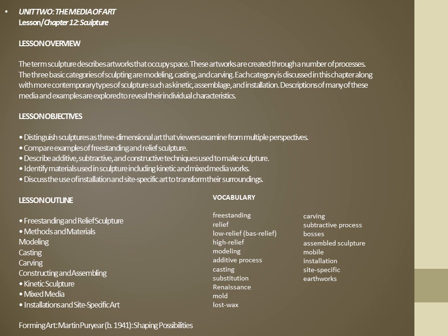The term sculpture describes artworks that occupy space. These artworks are created through a number of processes. Three basic categories of sculpting are modeling, casting, and carving. Each category is discussed in this chapter along with more contemporary types of sculpture such as kinetic, assemblage, and installation. Descriptions of many of these media and examples are explored to reveal their individual characteristics.